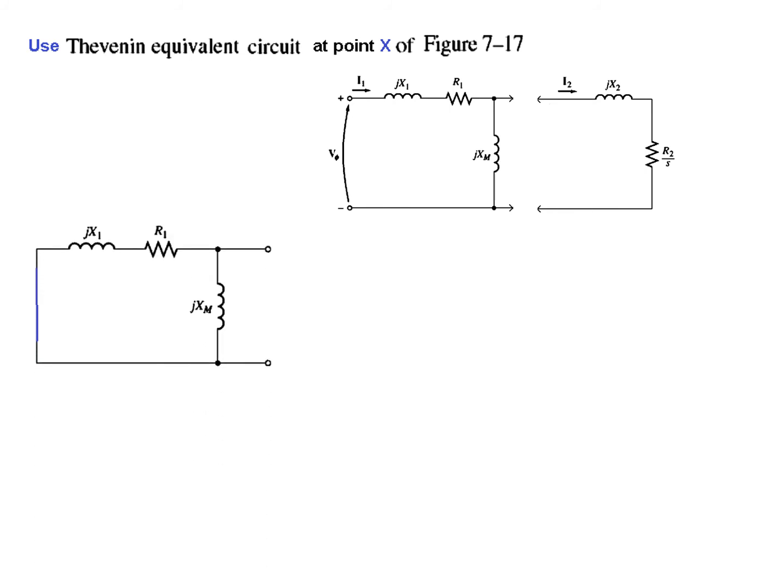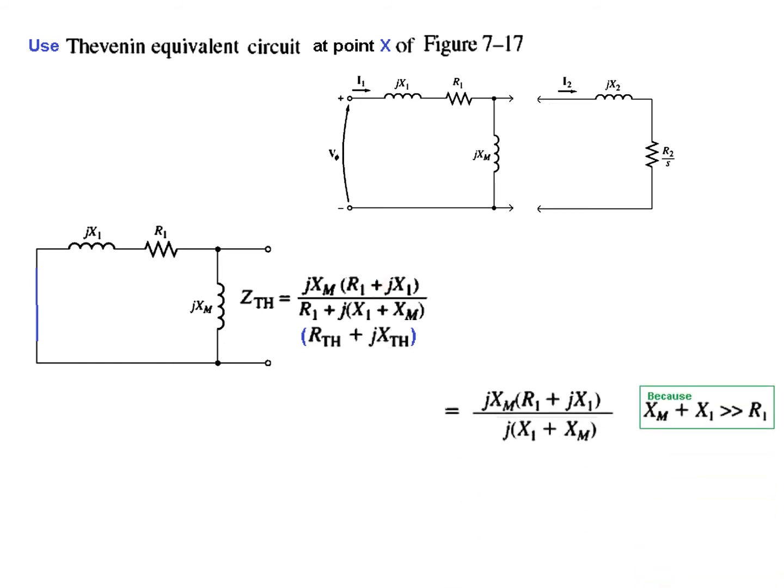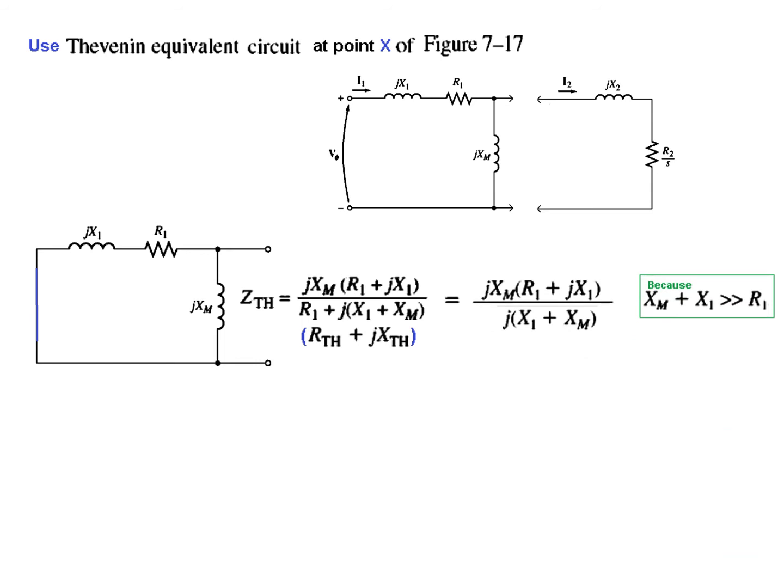Now we come to calculate Z_Thevenin. We know that for Z we put the source to zero, so we have short circuited the source. Now this thing is in parallel with X_M. So Z_Thevenin will be these two in parallel, so Z_XM multiplied by R_1 plus j X_1 and divided by the total impedance. This contains two elements, one is the real part will be R_Thevenin and the imaginary part will be X_Thevenin. First of all we have to simplify this. What we are doing here also we are assuming that X_M plus X_1 is greater than R_1, and therefore this R_1 is neglected. So this is what is left.